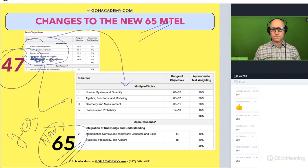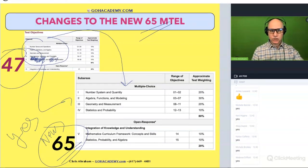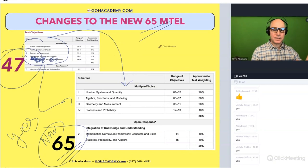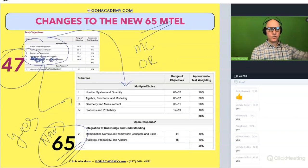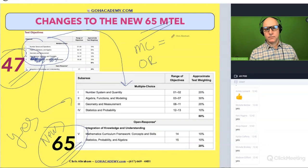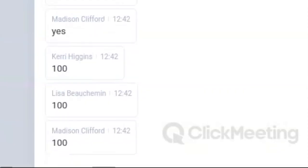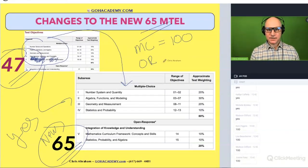Now when the 65 first came out, let's just compare real quick the multiple choice and the open response. How many—when the 47 had how many multiple choice questions? How many? 100. And how many essays?